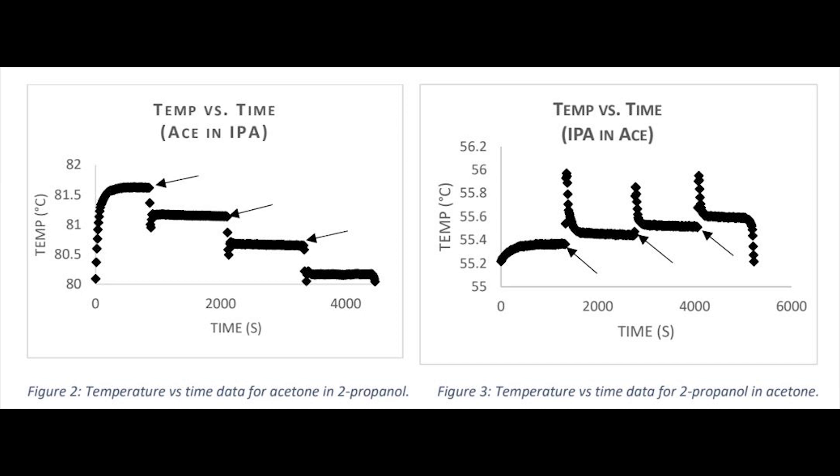This plot represents the experimental data collected during the experiment for our two systems. Each solute injection made is represented by the arrows in these figures. If we look at figure two, we see that the equilibrium temperature upon each acetone addition decreases, because acetone's boiling point is lower than isopropanol's. And for figure three, it's the opposite system. So upon each addition of IPA into acetone, the equilibrium temperature increases.